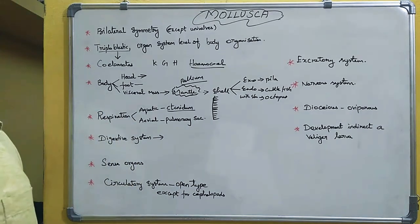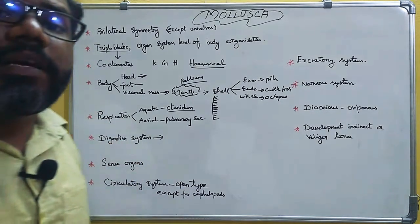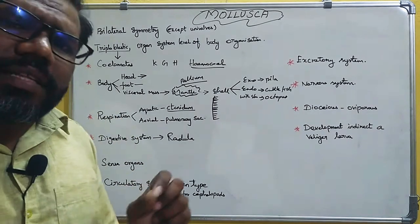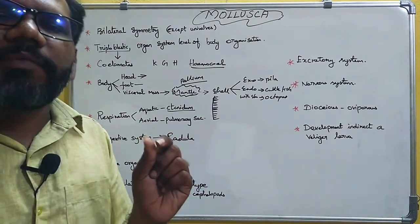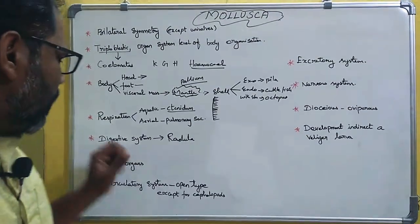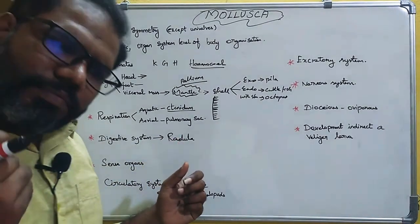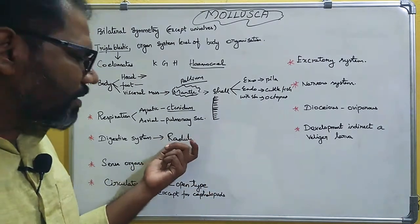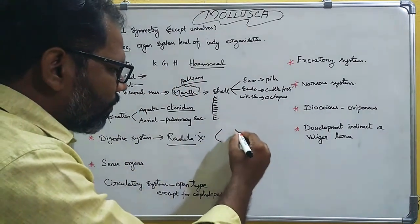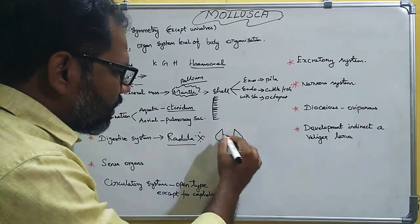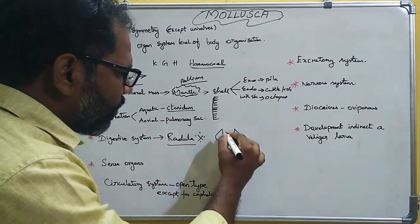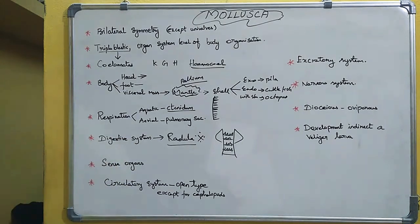The digestive system includes hepatopancreatic glands and salivary glands. A very important rasping organ called the radula is present. The radula has chitinous teeth arranged in transverse rows. The radula is used to grasp and grind food. This structure is unique to mollusca.